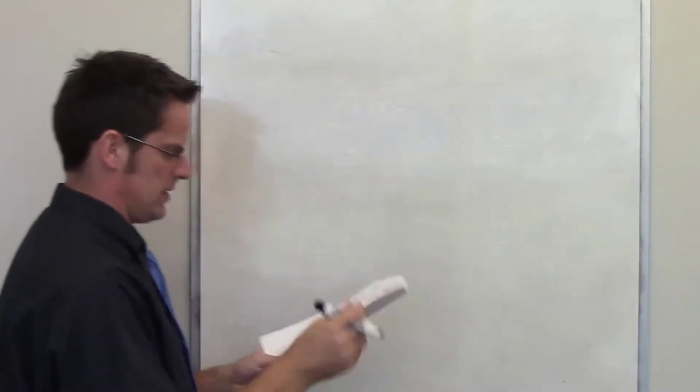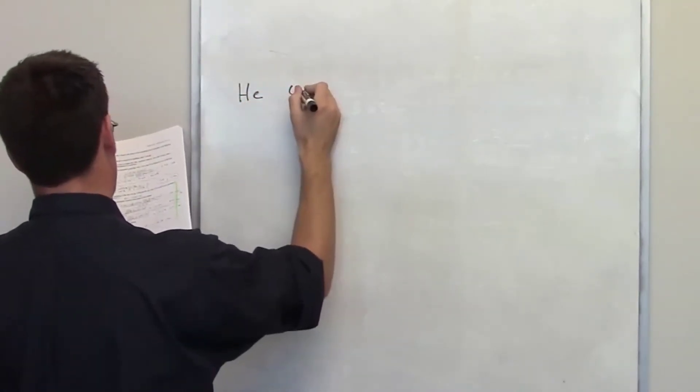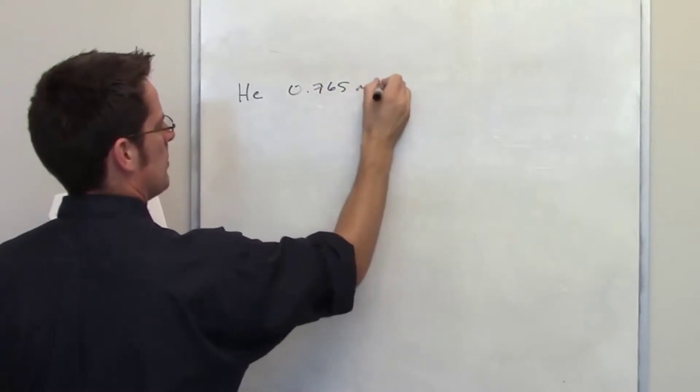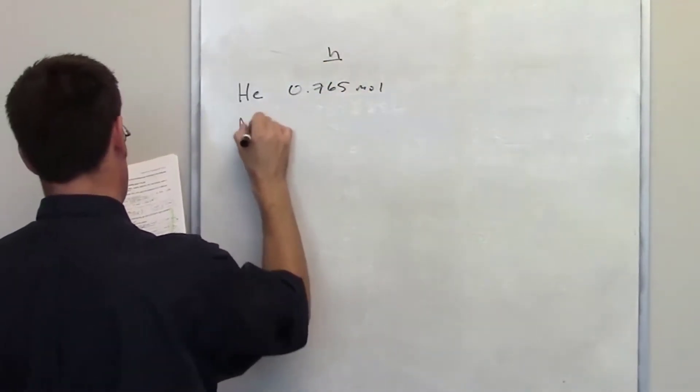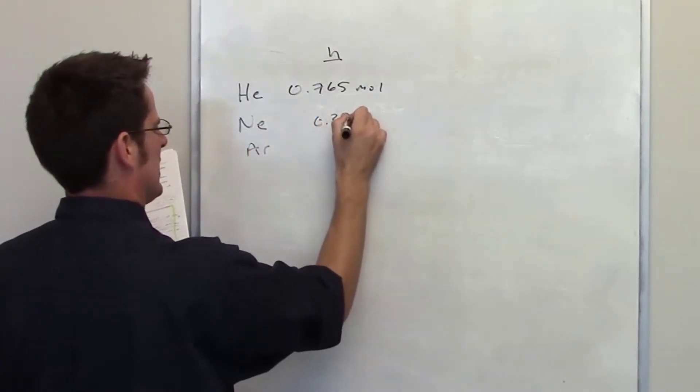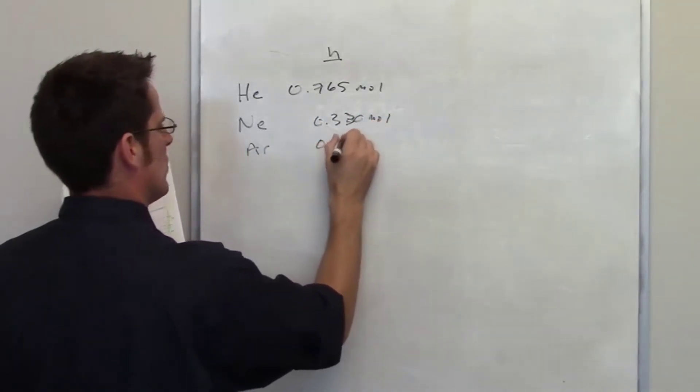In this question, I'm tasked with the following information. I have helium, and I'm told that I've got 0.765 moles. So I'll put that under the category n for moles or number of moles. I've got neon, I've got argon, and I've got 0.330 moles of neon.